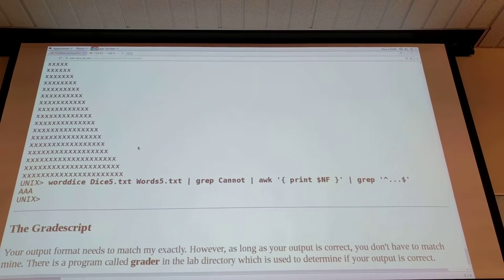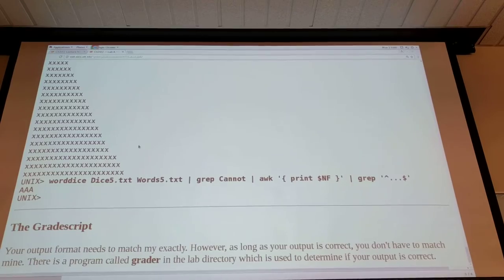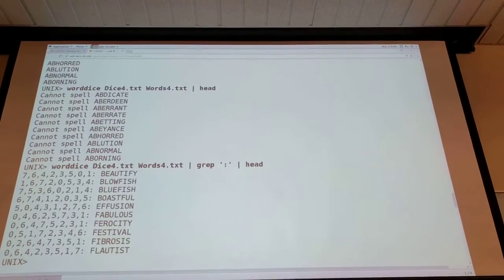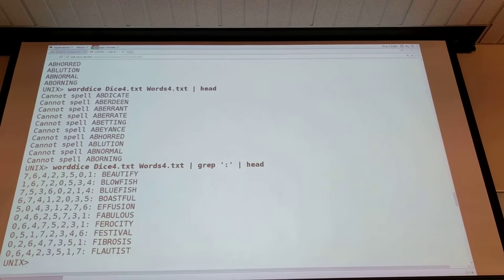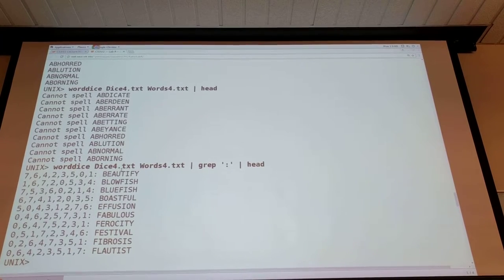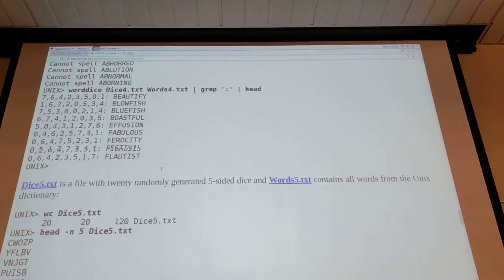So there's also, for the grade script, your output format needs to match his exactly, which means that you have to do it with the cannot spell and then the word, and then you have to print out the die just like this. So your format for the output needs to match.